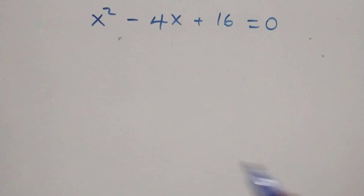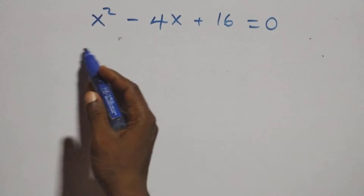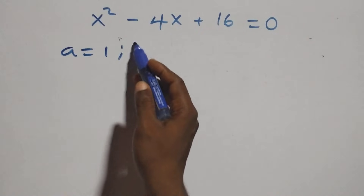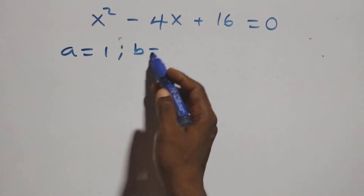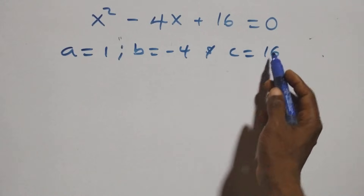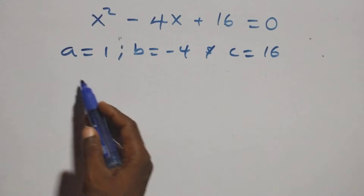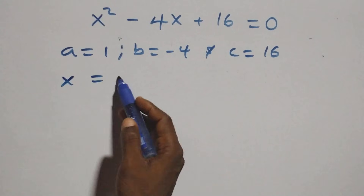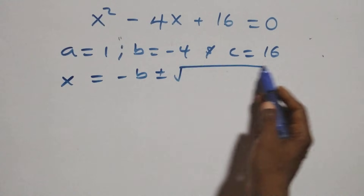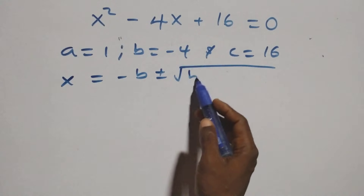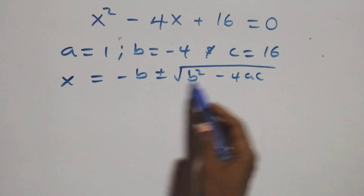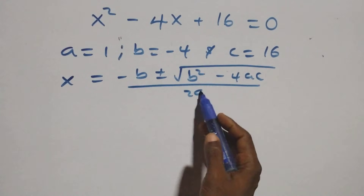Then, for the next step, we have a quadratic equation where a equals to 1, b equals to minus 4, and c equals to 16. Applying the quadratic formula: x equals to minus b plus or minus square root of b² minus 4ac, all over 2a.